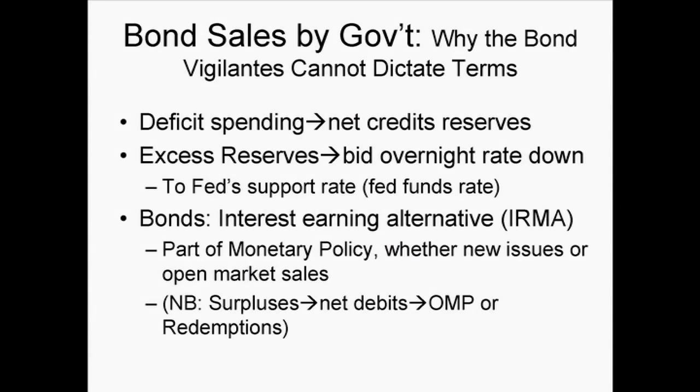Deficit spending leads to net credits to banking system reserves, which will normally lead to excess reserves. If we're running a $1 trillion budget deficit, by identity we're creating a trillion dollars of bank reserves. In normal times, banks don't want to hold excess reserves, so they offer them in the overnight market called the Fed Funds Market in the United States. That drives the overnight interest rate down, potentially to zero.